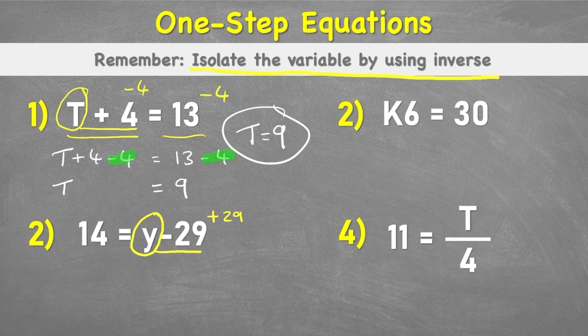But remember, if we're going to put a positive twenty-nine on that side, we also need to put a plus twenty-nine on this side too to make sure our equation stays equivalent and balanced. So my next line would read fourteen plus twenty-nine equals Y minus twenty-nine plus twenty-nine. Now I can begin to solve, and again notice I've inserted this plus twenty-nine on both sides.